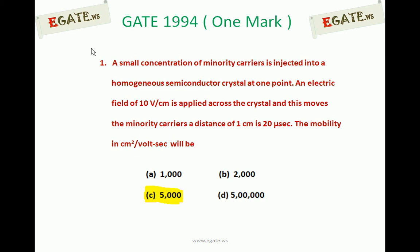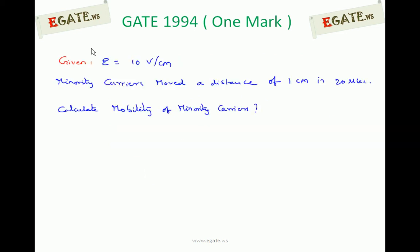Let us see the details now. The given information is: electric field E = 10 volt per centimeter, and that electric field is moving the minority carriers a distance of 1 centimeter in 20 microseconds. We are going to calculate the mobility of minority carriers.